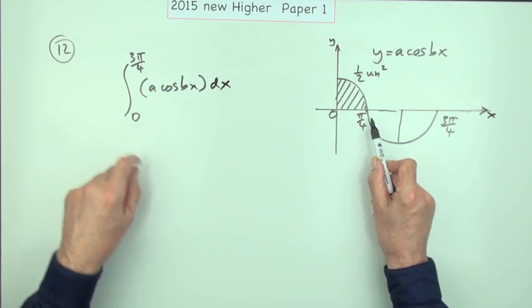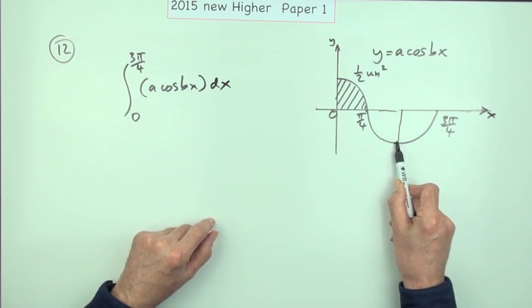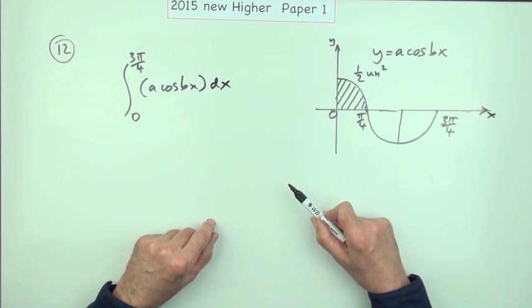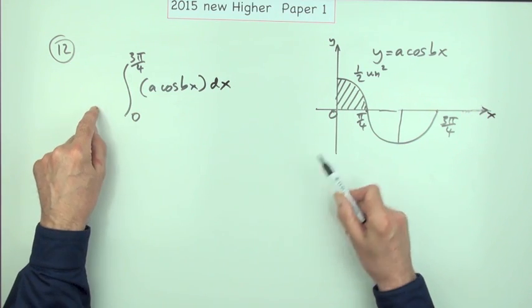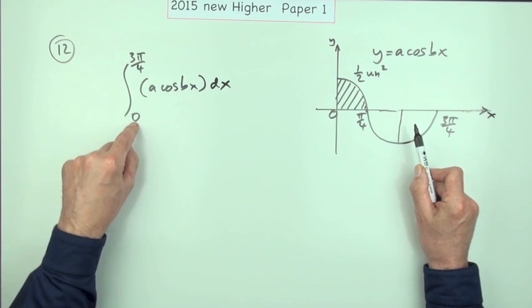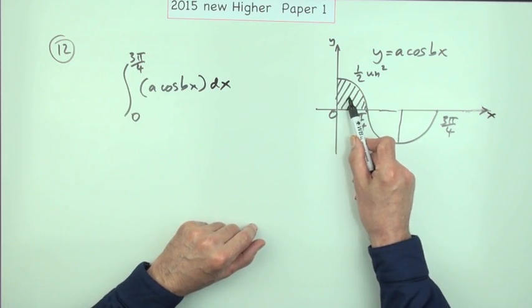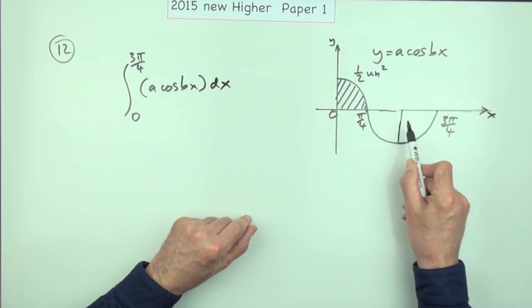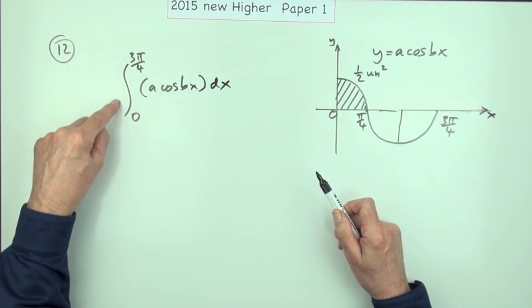So by the time you'd got to here, all of these would have cancelled out all of those and you'd be back to zero. If it said what's the area altogether from zero to three pi upon four, then you could say yes, the areas of each shape - a half and a half and a half - would be three upon two. But as far as the integral is concerned...